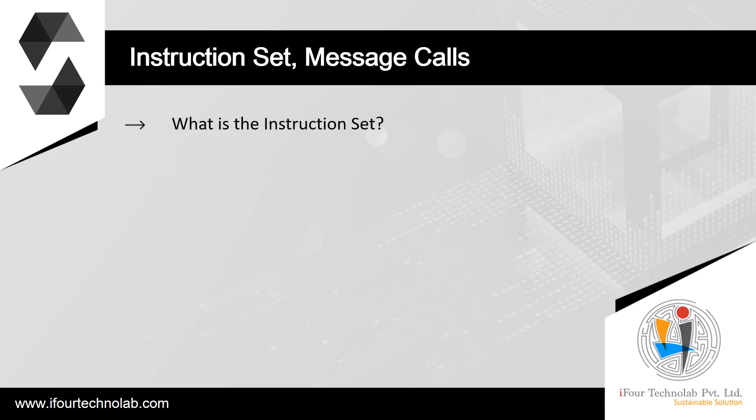What is the instruction set? The instruction set of the EVM is kept minimal in order to avoid incorrect or inconsistent implementations, which could cause consensus problems. All instructions operate on the basic data type of 256-bit words, or on slices of memory or other byte arrays. The usual arithmetic, bit-logical, and comparison operations are present. Conditional and unconditional jumps are possible. Furthermore, contracts can access relevant properties of the current block, like its number and timestamp.